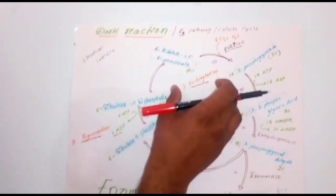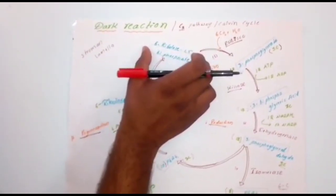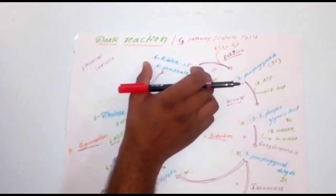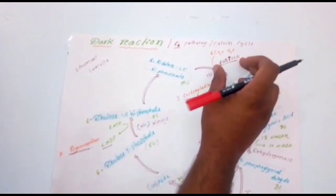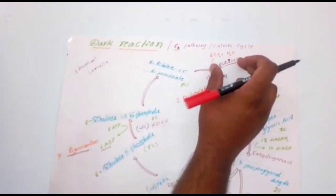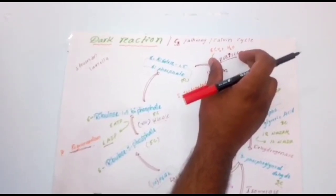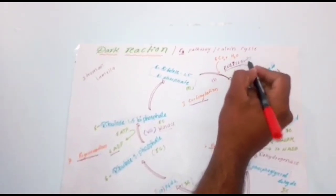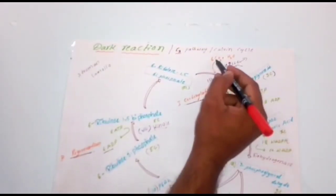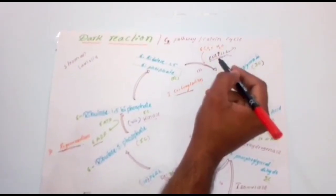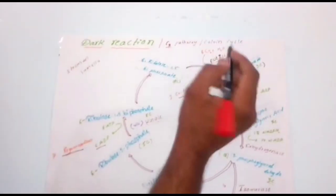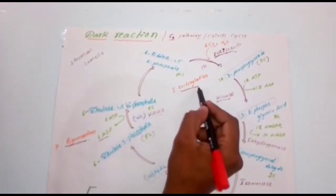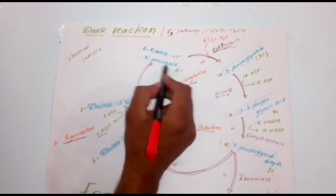What is meant by carboxylation? In the stroma region, there is ribulose-1,5-bisphosphate (RuBP) already present — it is the carbon dioxide acceptor. In the presence of a special enzyme called rubisco enzyme, which stands for ribulose-1,5-bisphosphate carboxylase as well as oxygenase, carbon dioxide fixation as well as oxygen action both take place. In carboxylation, carbon dioxide reacts with RuBP, ribulose-1,5-bisphosphate.